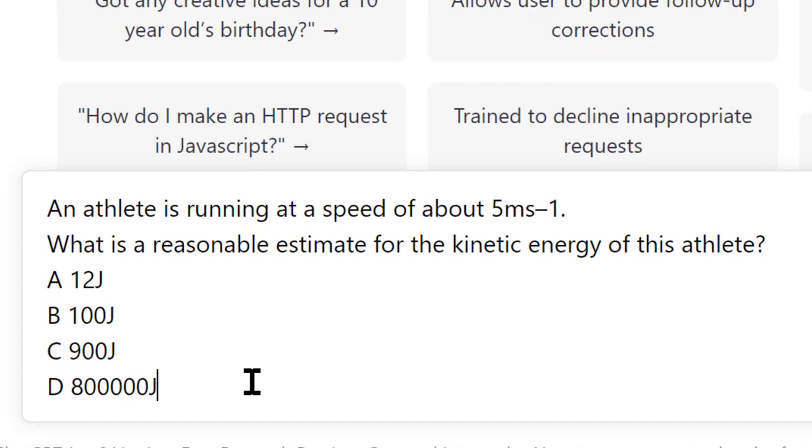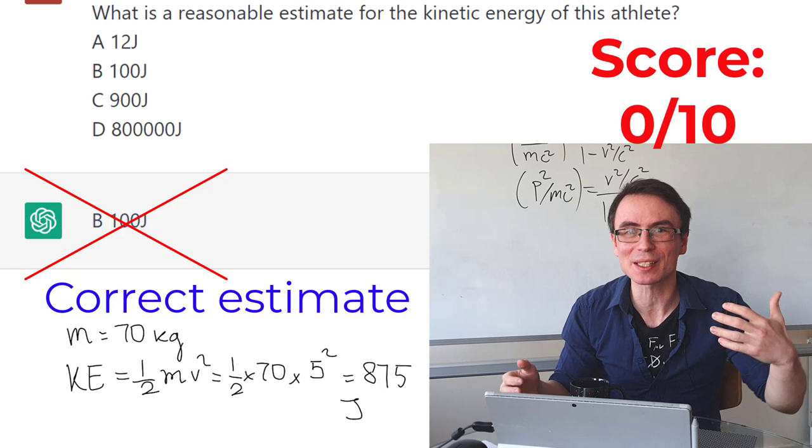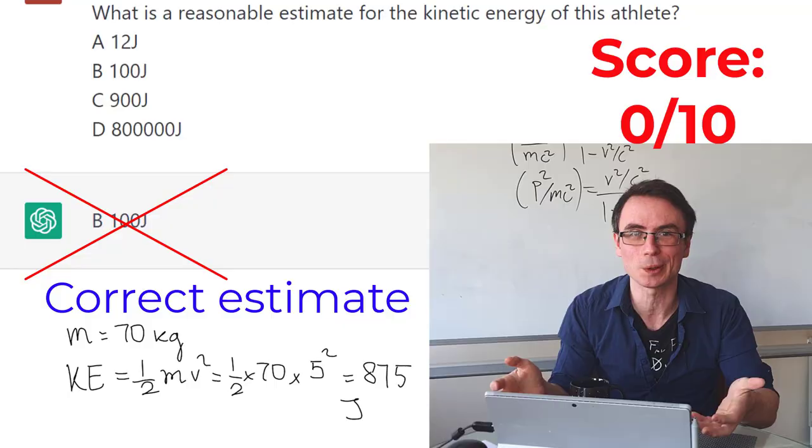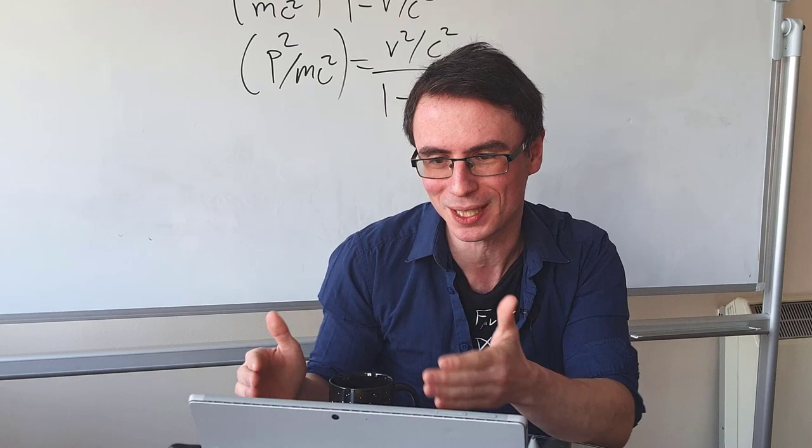Let's paste this into ChatGPT. Now that's really interesting. It's chosen the wrong answer B, whereas the correct answer, assuming a mass of around 70 kilograms, is C, around 900 joules. This is not a particularly difficult question, so I'm quite surprised that ChatGPT did not get that correct.